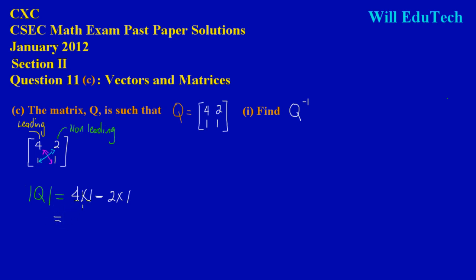Now this is equal to 4. 1 will give us a 4, and I have a negative sign there. So negative 2 times positive 1 will give us negative 2. The determinant of the matrix Q is 4 minus 2, which is 2, and that's our answer.